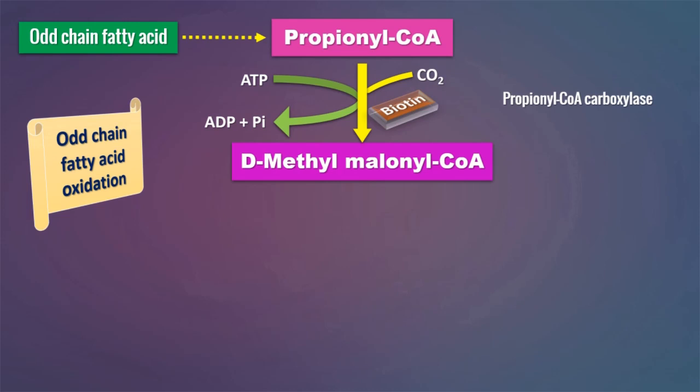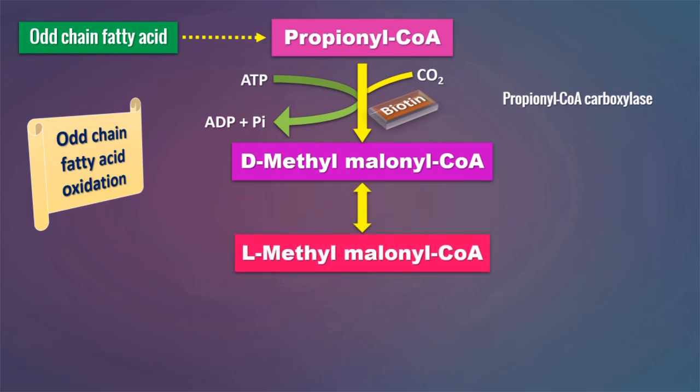Biotin is a coenzyme for propionyl-CoA carboxylase. This D-methylmalonyl-CoA is then isomerized to L-methylmalonyl-CoA, catalyzed by methylmalonyl-CoA racemase (or epimerase). There is a rearrangement of atoms within the molecule, converting the D-stereoisomer to the L-stereoisomer.